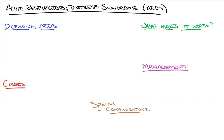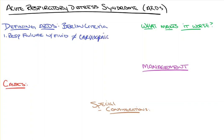It's this fluid accumulation that causes the chest x-ray imaging commonly seen that we're going to discuss shortly. To define ARDS using clinical criteria, we use something called the Berlin criteria. The first thing is that it is a form of respiratory failure with fluid in the lungs that is not attributed to cardiogenic shock or cardiogenic origin — meaning the patient does not have fluid in their lungs because their heart isn't pumping well and backing up into the lungs.